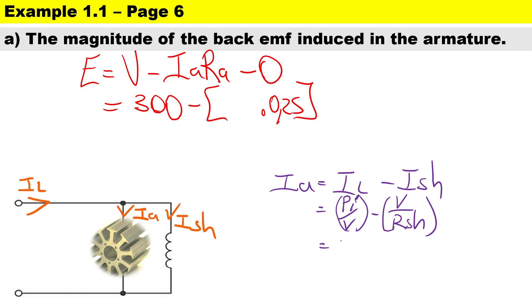Just remember, for all motors we use the input power. In this instance our power is 15,000 watts divided by the voltage of 300, and to subtract the shunt current, the terminal voltage is 300 and the shunt resistance is 150.